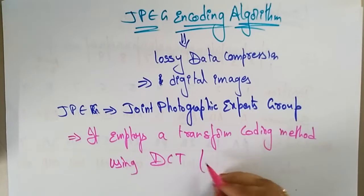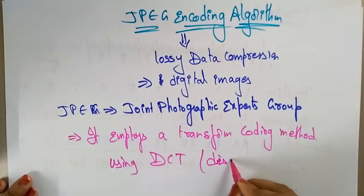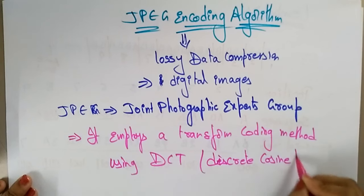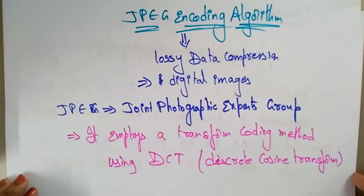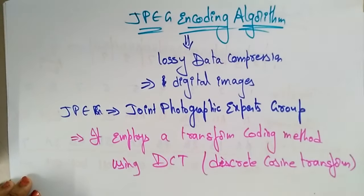The transform coding method uses the DCT technique. DCT is nothing but Discrete Cosine Transform. By using this Discrete Cosine Transform, it employs a transform coding method.